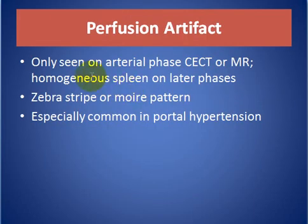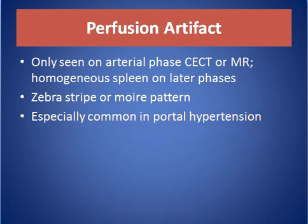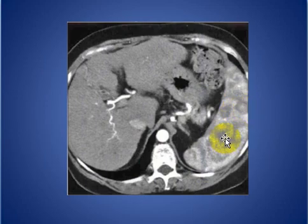Perfusion artifact is only seen on the arterial phase on contrast-enhanced CT or MRI, with the spleen becoming homogeneous on later phases. As seen here in the arterial phase, there are zebra-like perfusion defects in the spleen, which disappear on the portal venous phase.